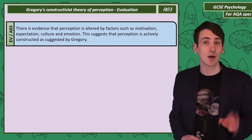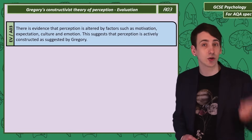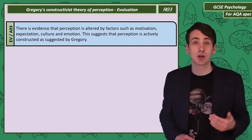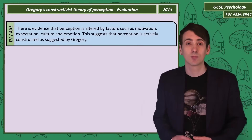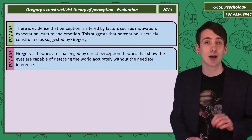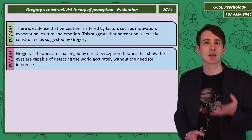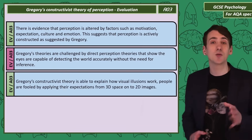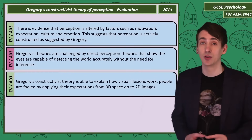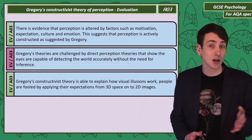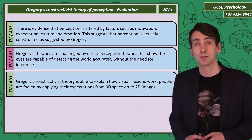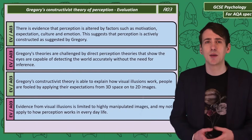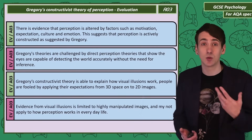Let's evaluate Gregory's ideas. In the next section we'll look at how perception is altered by expectation, culture, and emotion — all of these factors support Gregory's idea that perception is actively constructed. But there is an alternate theory suggesting the eyes are actually able to detect the world accurately without the need for inferences. Another advantage of Gregory's theory is that it does provide an explanation for visual illusions — people make incorrect inferences from limited sensory information. However, these visual illusions are unusual, manipulated 2D images that may not really apply to how we perceive the world in normal life.